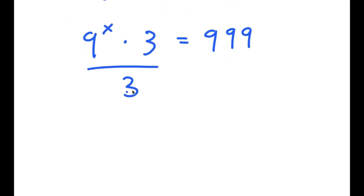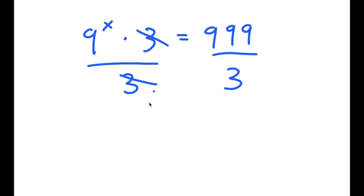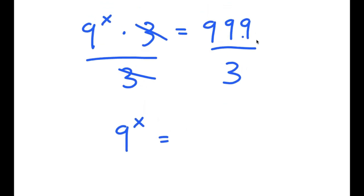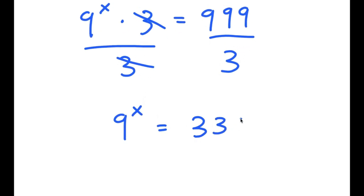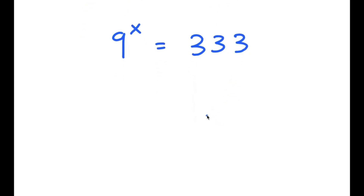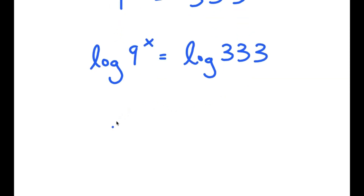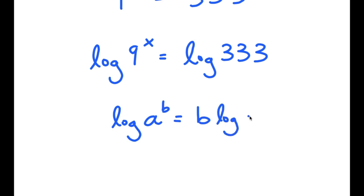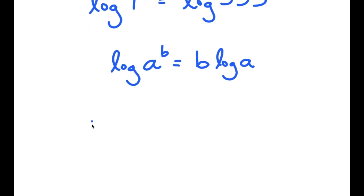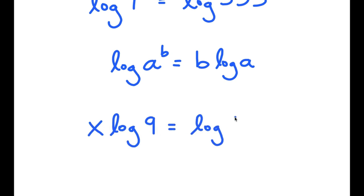From here I'm going to divide both sides by 3. So these two cancel out and I get 9 to the power of x is equal to 999 divided by 3, which is 333. From here I'm going to take the log on both sides. So I get log of 9 to the power of x equals log of 333. And if I have something in the form log a to the power of b, this is equal to b times log a. So for log 9 to the power of x, I can move x to the front, and I get x times log 9, which is equal to log 333.